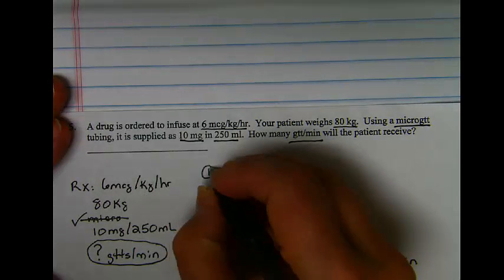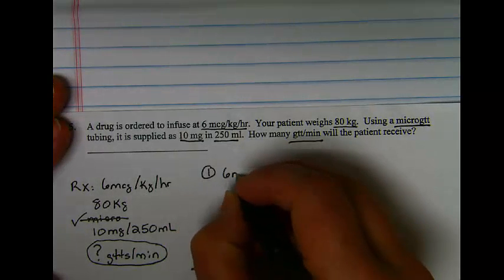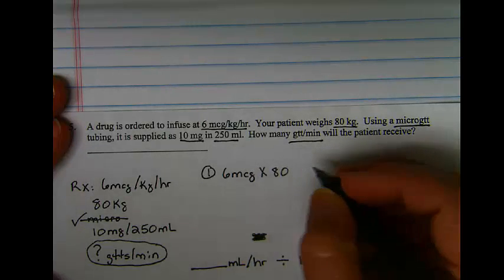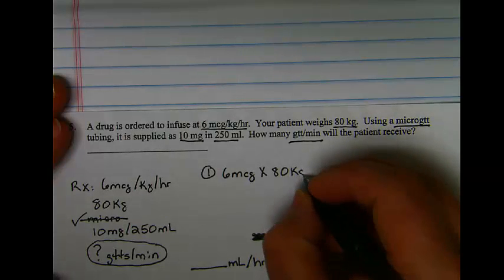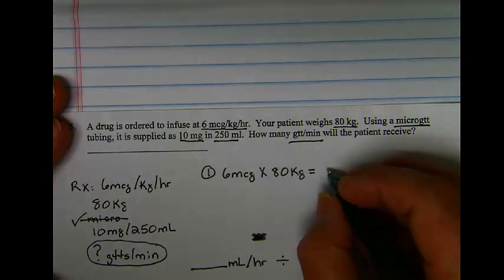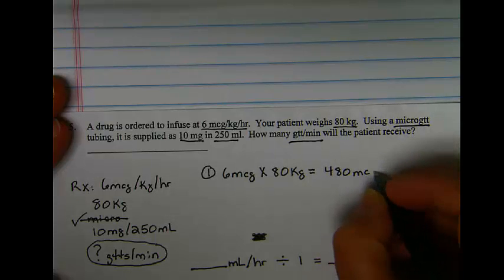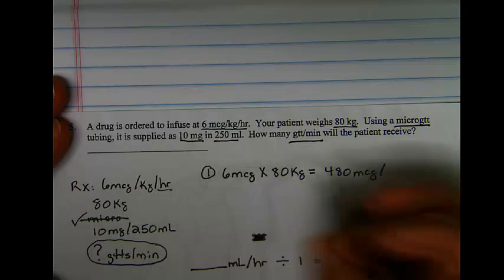To calculate this dose, I'm going to take the 6 micrograms and multiply it by the 80 kilogram weight, which will give me 480 micrograms per hour.